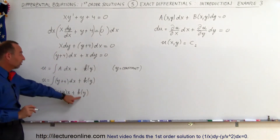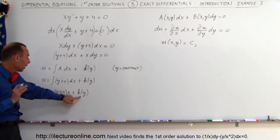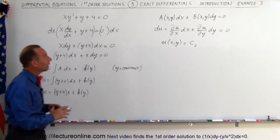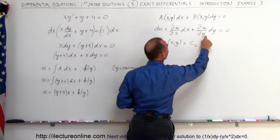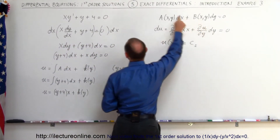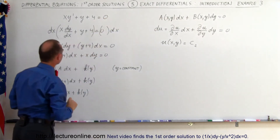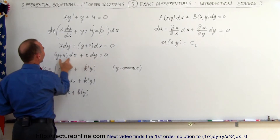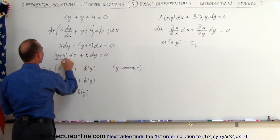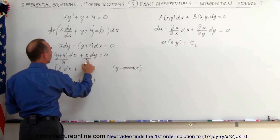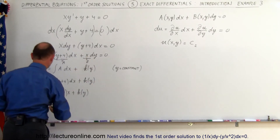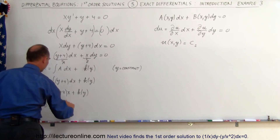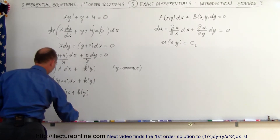The question is: what is this function k(y)? We can figure it out by taking the partial derivative of u with respect to y, which should equal B. B is equal to x — this quantity (y plus 4) is A, and this quantity x is B. So since B equals x, we have: x equals the partial of u with respect to y.